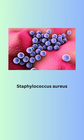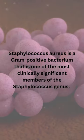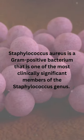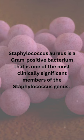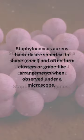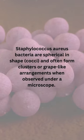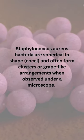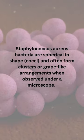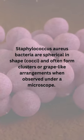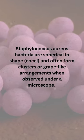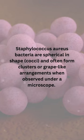Staphylococcus aureus is a gram-positive bacterium that is one of the most clinically significant members of the Staphylococcus genus. Staphylococcus aureus bacteria are spherical in shape, cocci, and often form clusters or grape-like arrangements when observed under a microscope.